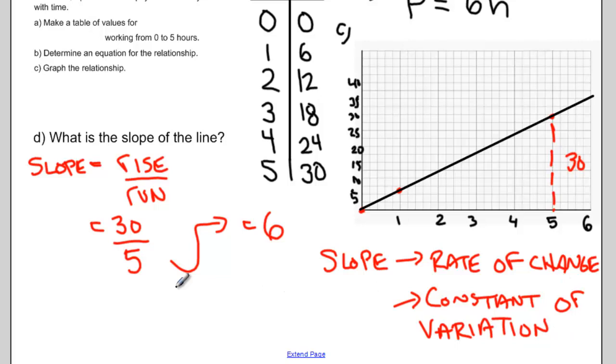This whole example is an example of direct variation. We can tell a relationship is direct variation if the line starts at the origin. If the line starts at the origin, we're dealing with an example of direct variation.